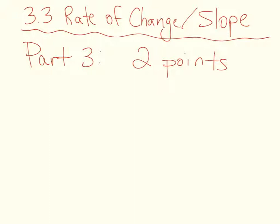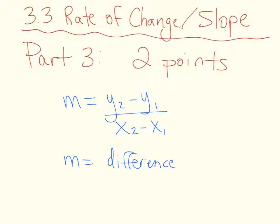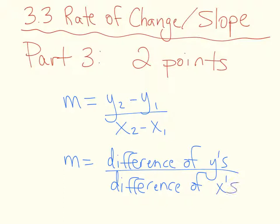But there is a formula. There is a formula that says m equals y2 minus y1 over x2 minus x1. So simply you're finding the difference of y's over the difference of your x values. We're doing exactly what we talked about when we counted, but now there's actually a formula for those of you like myself who really like using formulaic things.